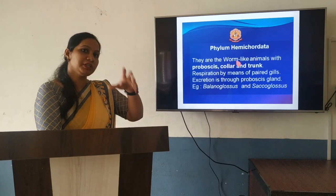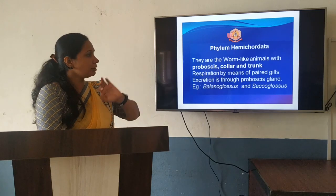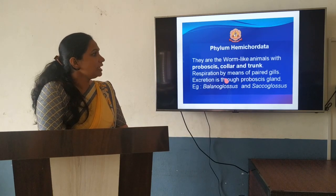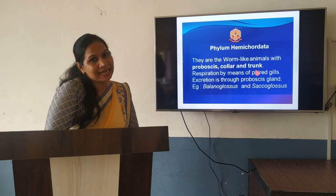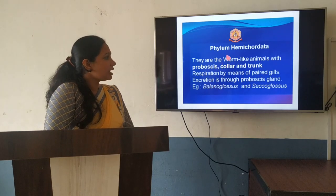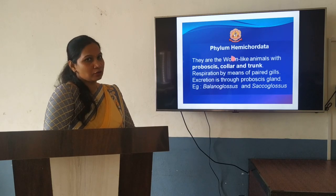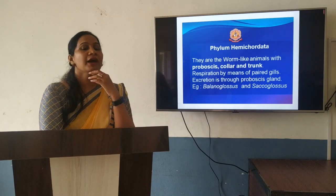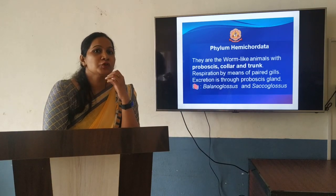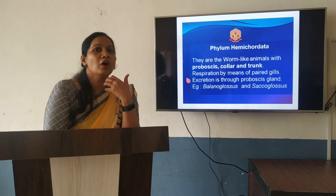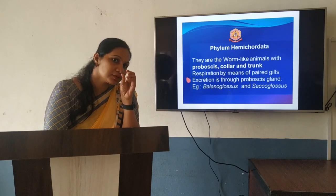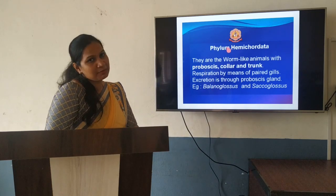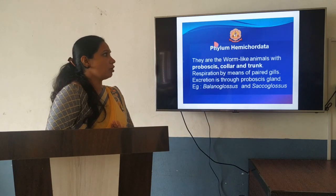They have gill slits for respiration. Excretion takes place through the proboscis gland. Examples are Balanoglossus as well as Saccoglossus. They are known to be semi-chordates because they have a stomochord — 'stomo' refers to the mouth, 'cord' refers to the notochord. There is a presence of a notochord-like structure in the mouth region, so they are called semi-chordates, but they are not true chordates.